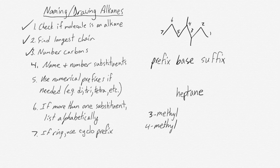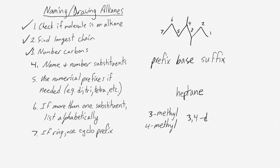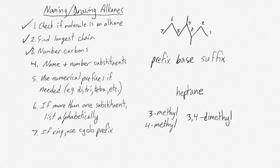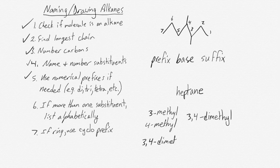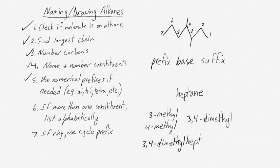We can combine similar substituents into a single term. Instead of saying 'three methyl, four methyl,' we say '3,4-dimethyl' — acknowledging that the methyl groups appear on carbons three and four, and indicating there are two of them with 'di'. We only have one type of substituent so we don't need steps six or seven. The final name is 3,4-dimethylheptane.